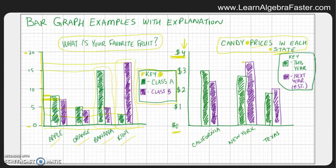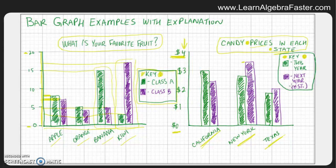The horizontal axis shows we're measuring three different states: California, New York, and Texas. The key shows that the green bars represent this year and the purple bars represent next year — an estimation, since that's in the future. Some analysis has been done, some trending data, and mathematicians have made a forecast for what they think next year's prices will be.